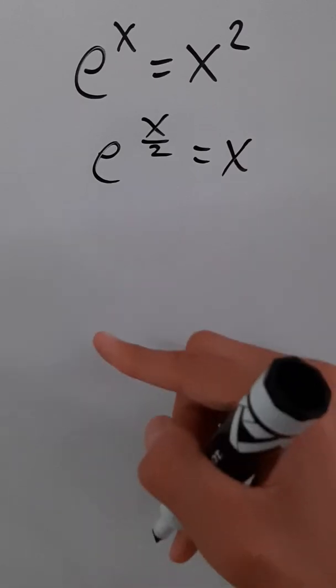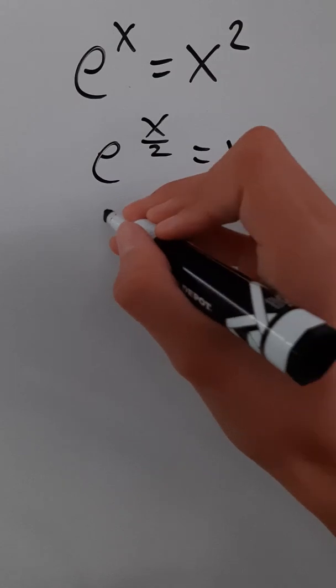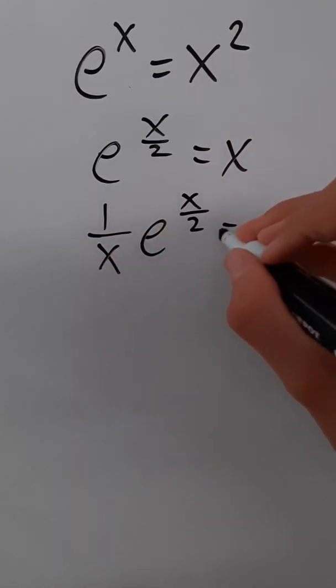Let's divide both sides by x and we can say that x is not zero because this wouldn't work with zero. So we get one over x times e to the x over two equals one.